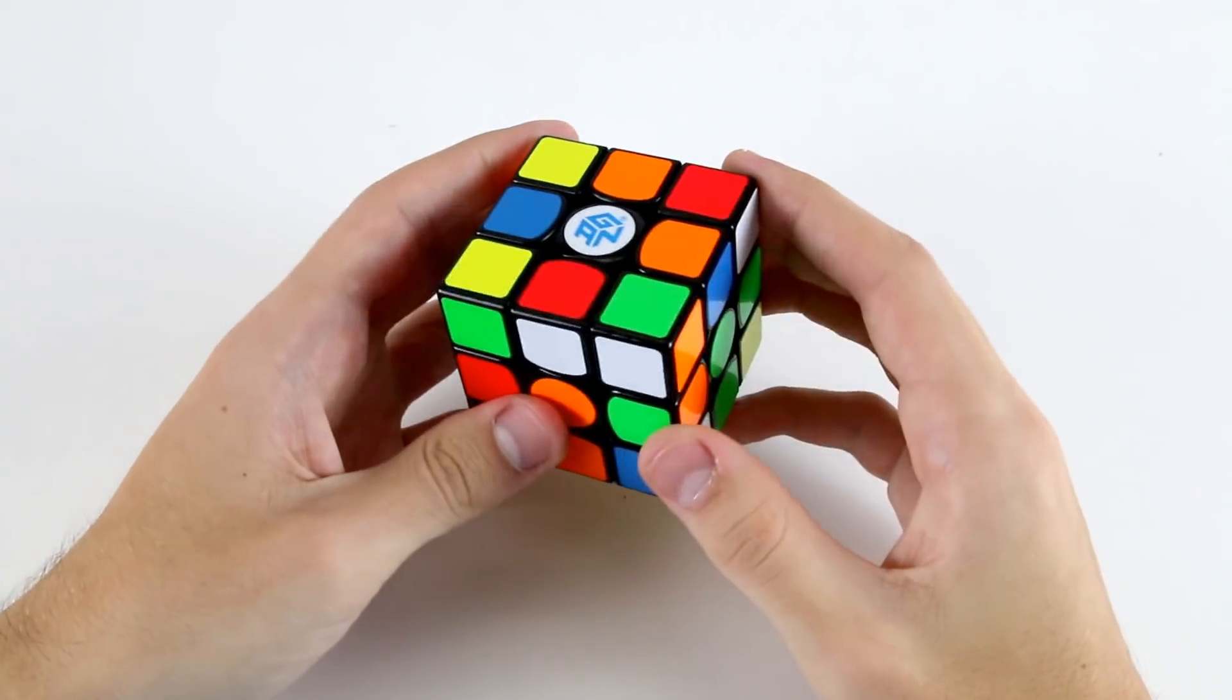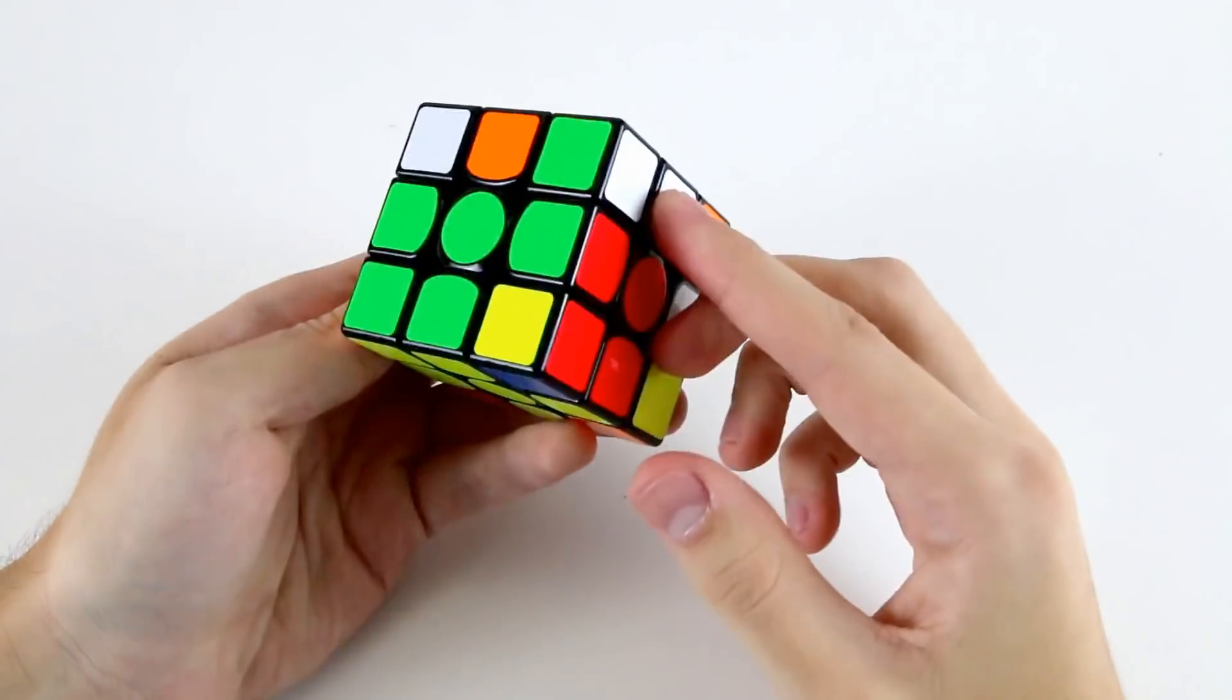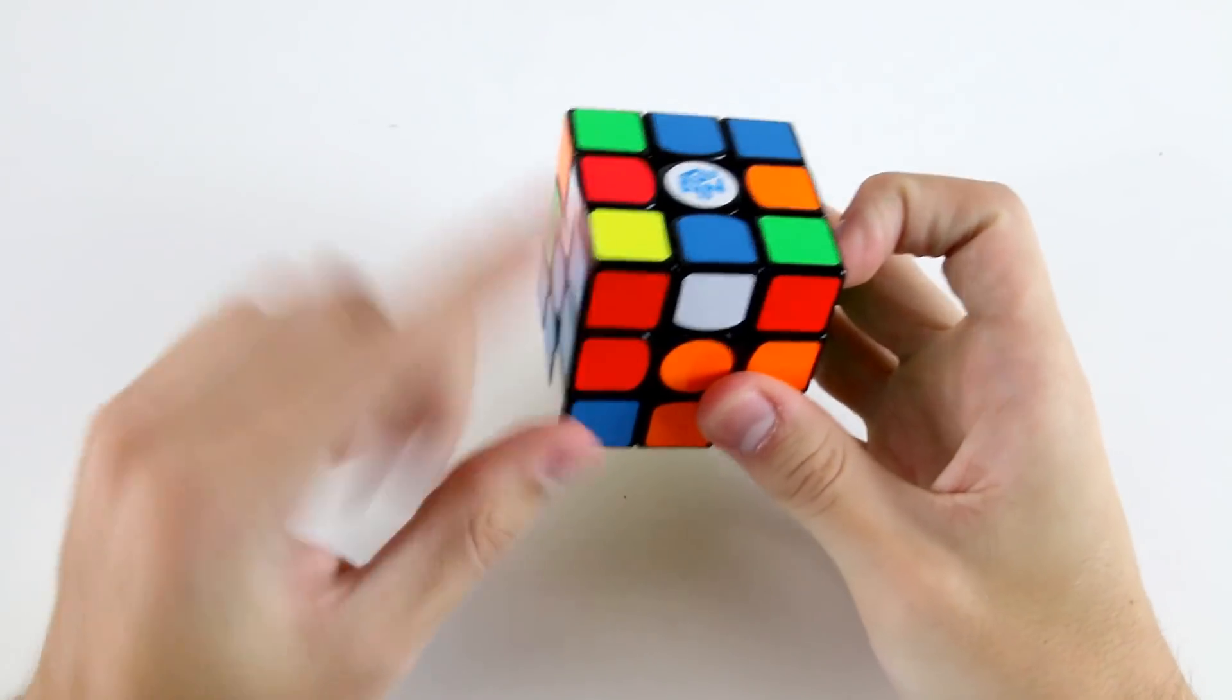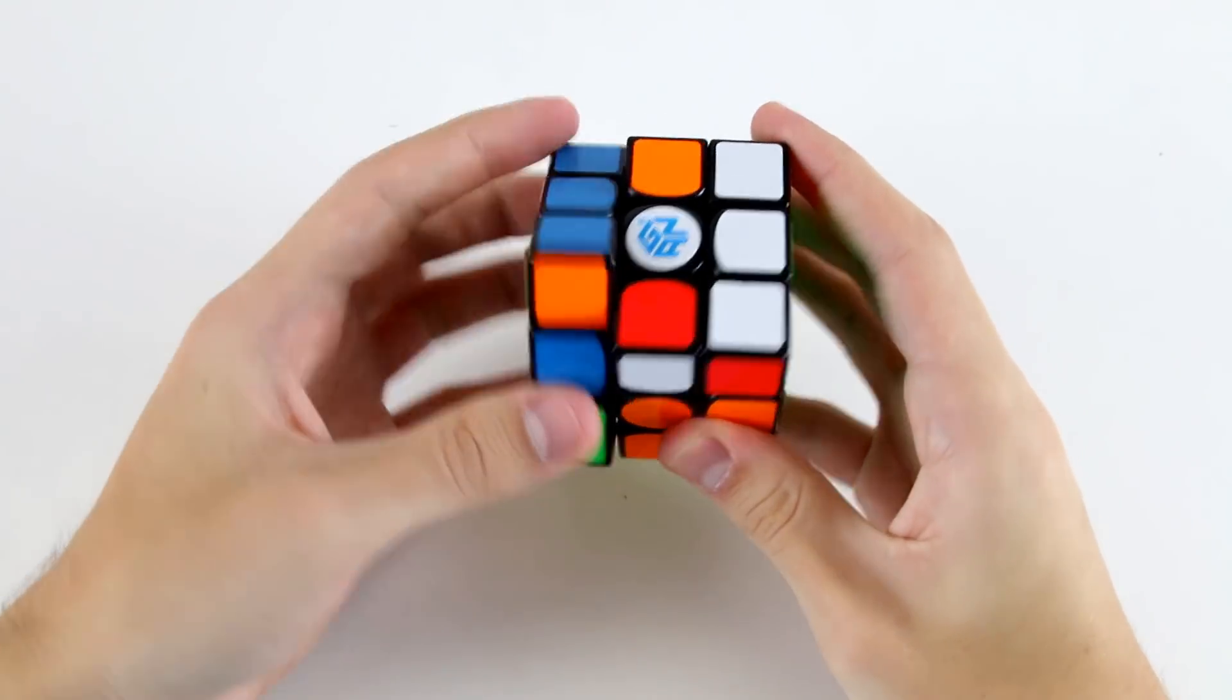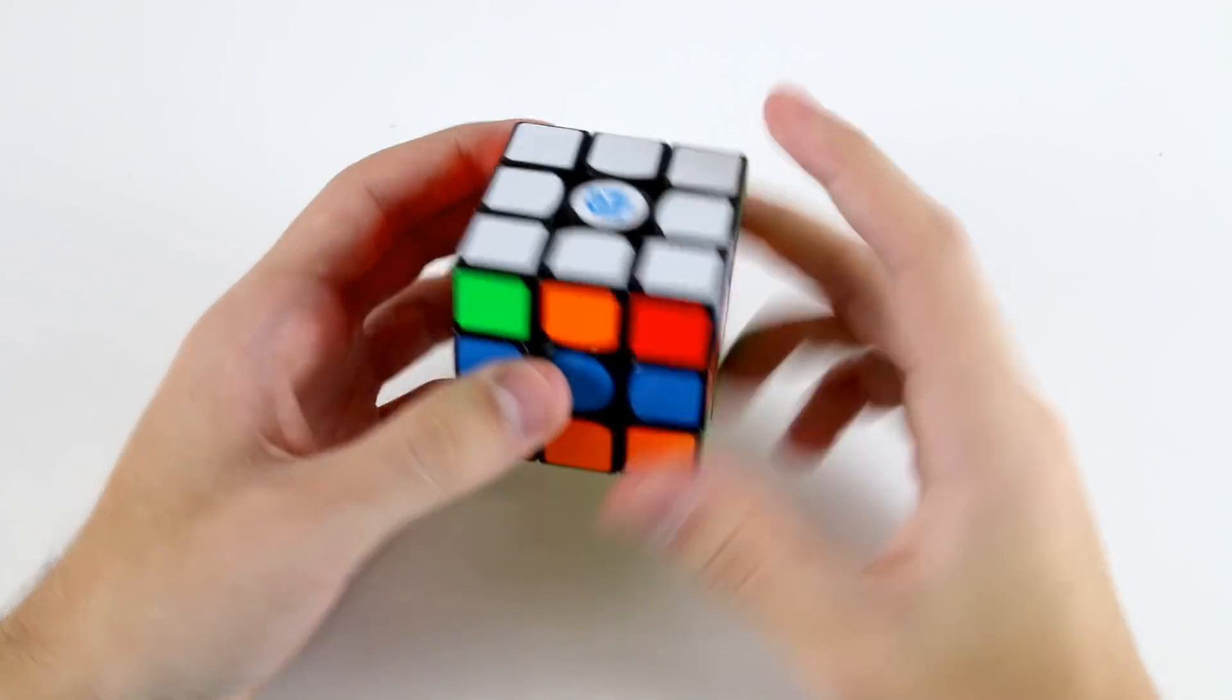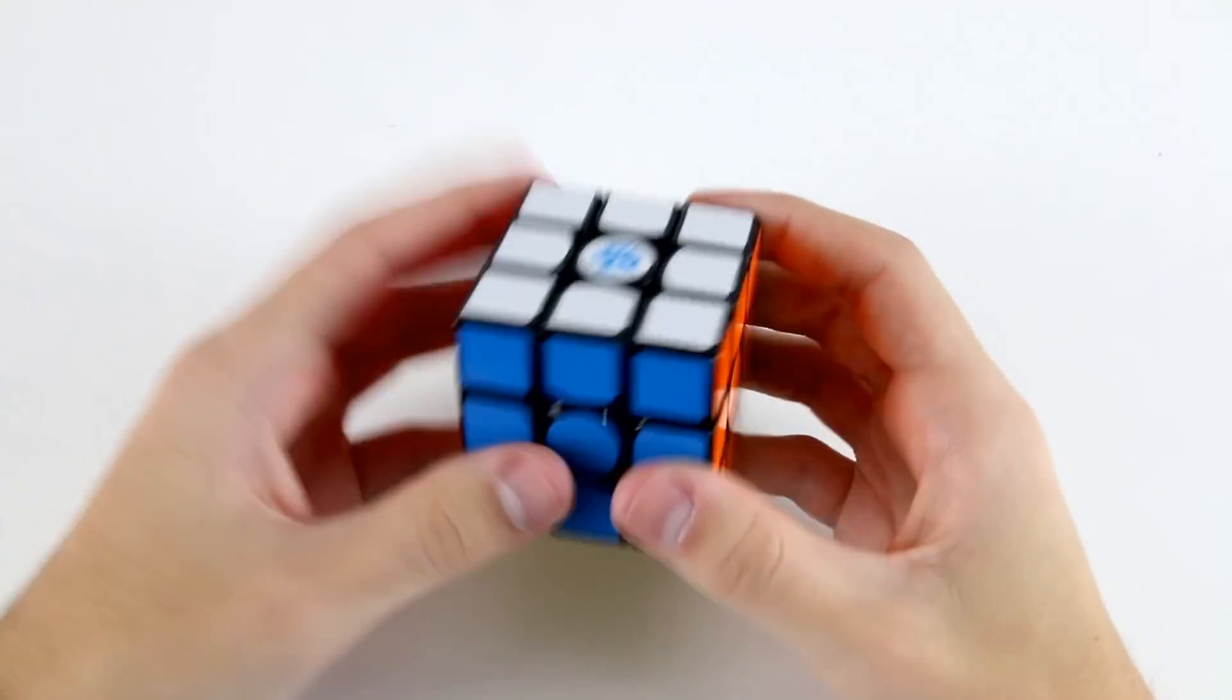Then for my first f2l pair, I can go for these two. Then for my second pair, I can go for this one and this one. Third pair, I'll go for these two. And then final pair. OLL and then g permutation. So it's kind of pretty straightforward but nothing particularly easy.